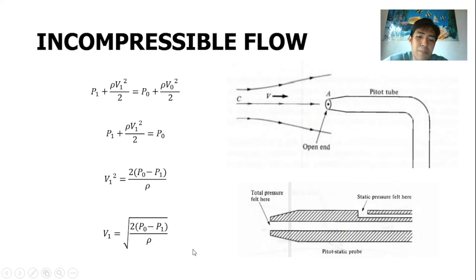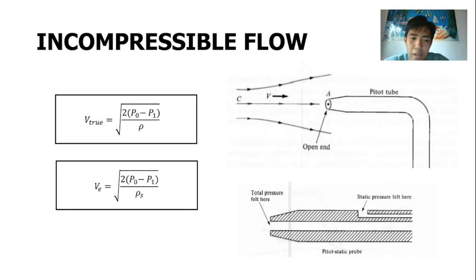Since velocity is zero at point 2, this becomes zero and this term cancels. This gives us this equation. Isolate velocity to get this formula. Notice that P0 minus P1, this is the pressure difference measured by the pitot-static probe. So we have two: true and equivalent velocity. The true velocity uses the true density or the actual density experienced by the aircraft. However, since altitude and conditions change, it's difficult to find the true velocity. So sometimes we use the equivalent velocity which uses standard sea level density.